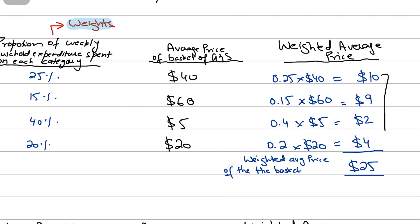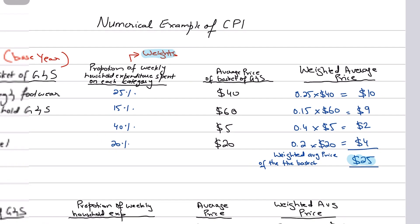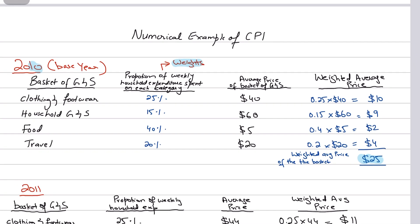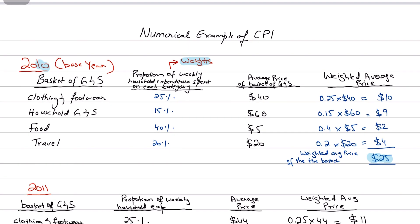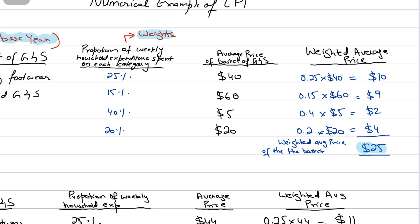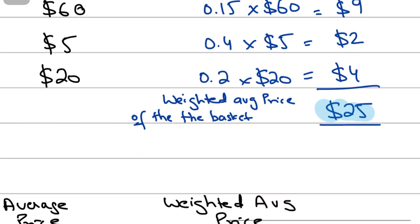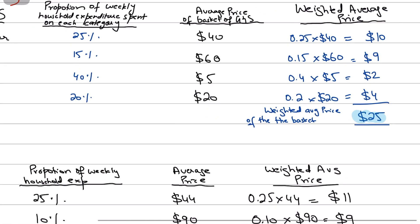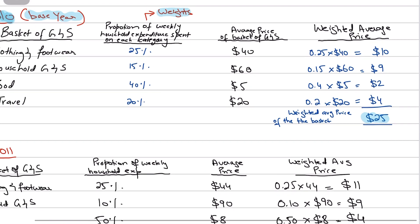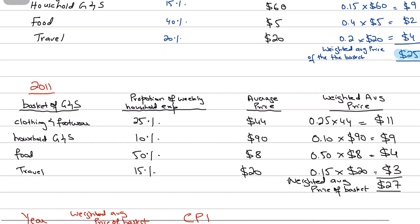You then add up all these weighted average prices to get the total weighted average price of the basket. This represents the weighted average price of the basket in 2010, which is our base year. The weighted average price of the basket in the base year is $25.